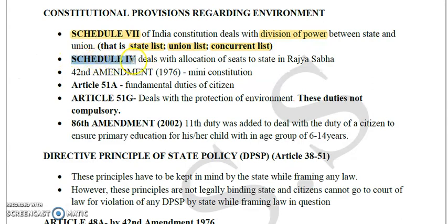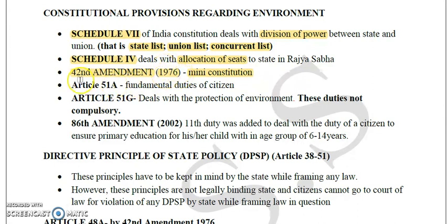Schedule 4 deals with the allocation of seats to states in the Rajya Sabha. Now, the important 42nd Amendment, also known as the mini constitution, was adopted in 1976. To remember the year: 4 plus 2 is 6, so it came in 1976. This amendment is known as the mini constitution.